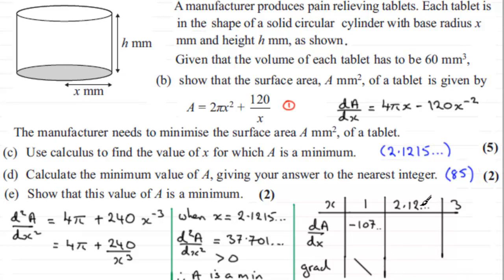Now, when we put 2.12, et cetera, into dA/dx, well, that gave us 0. And the gradient of 0 is a stationary point, flat.